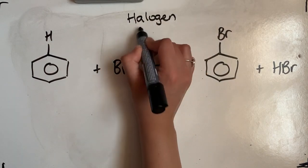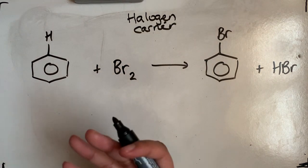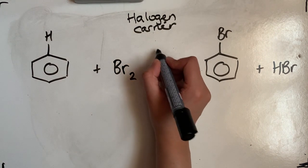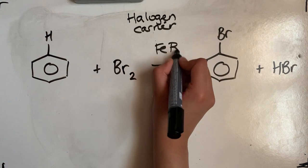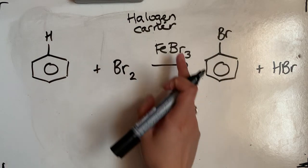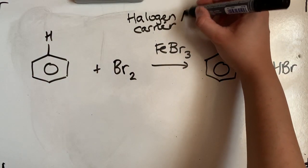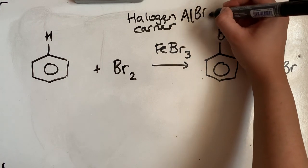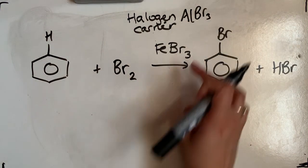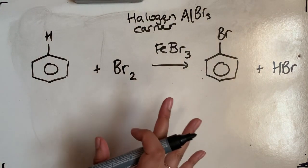So basically, just a fancy name for a catalyst. In this case, the halogen carrier that we can use is FeBr3. We could, in this case, given that it's the bromination, use aluminium bromide, which is AlBr3. As long as it's got that bromine there, if we're doing the bromine reaction with it, that's fine.